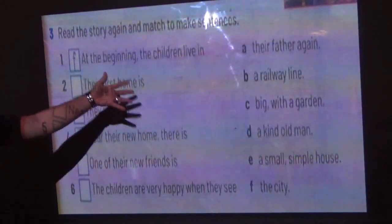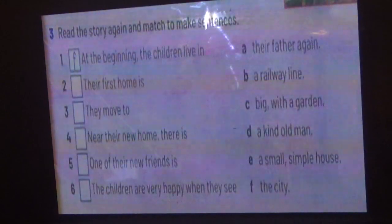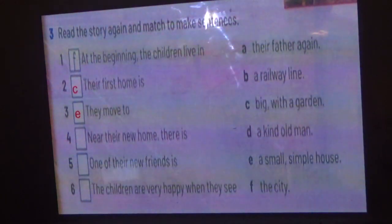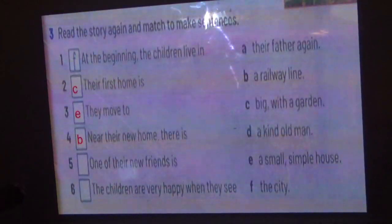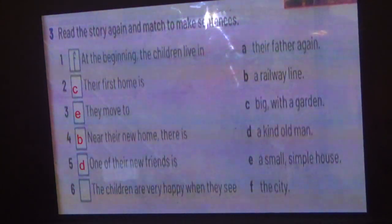Read the story again and match the sentence halves. At the beginning the children live in the city. Their first home is big with a garden. They move to a small, simple house. Near their new home there is a railway line. One of their new friends is a kind old man. The children are very happy when they see their father again.